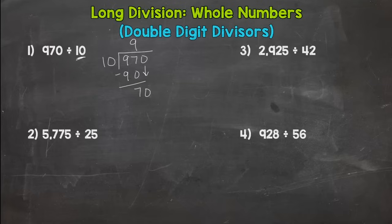70 divided by 10, or think of it as how many whole groups of 10 can I make out of 70? And it is 7. 7 times 10 is 70. Subtract, I get a nice clean cut, no remainder, quotient of 97. And remember quotient means answer to a division problem.